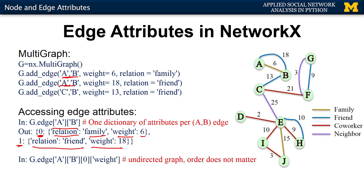Because this is an undirected multi-graph, the order of the nodes doesn't matter. To get the weight for the first edge a-b, you add index 0 and the answer is 6. If you wanted the weight on the second edge, you use index 1 and get 18. Since this is undirected, the node order doesn't matter.